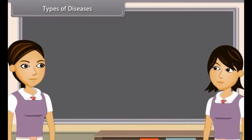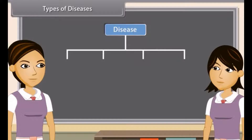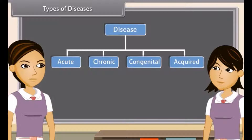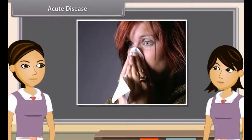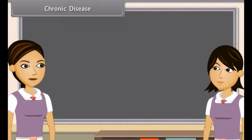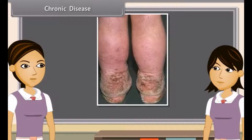Human diseases are grouped into four categories: acute, chronic, congenital and acquired. Acute diseases are those whose effects come on suddenly and affect the body quickly — for example, influenza. Chronic diseases are those whose symptoms last for months or years — for example, elephantiasis, tuberculosis, etc.